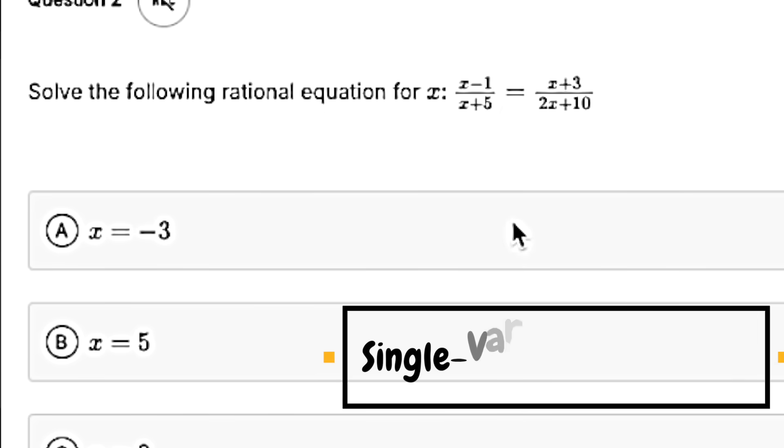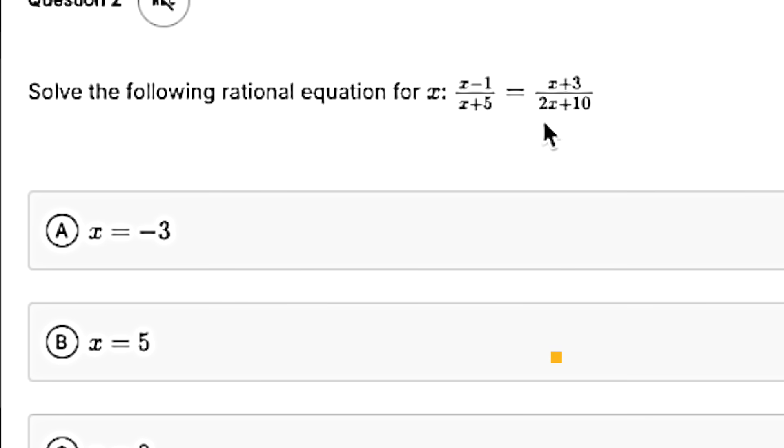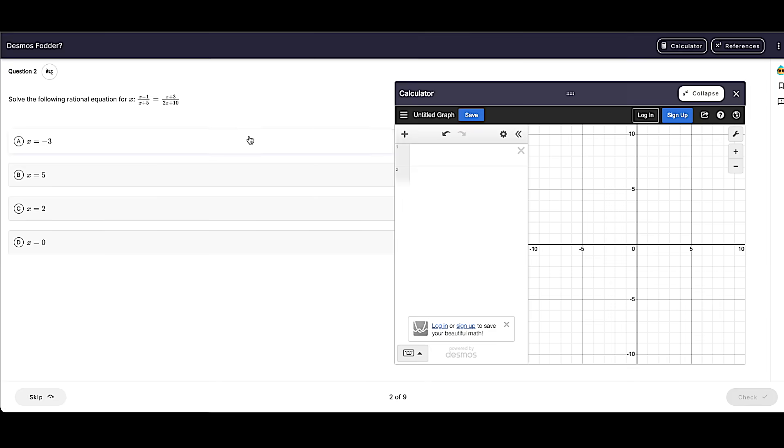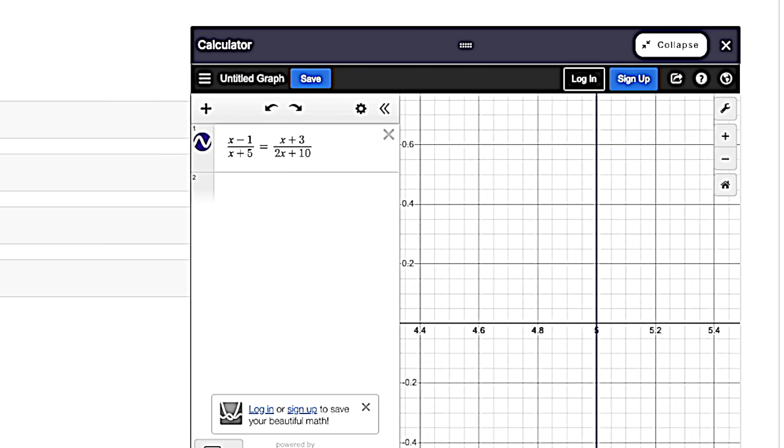You can also use Desmos for single variable equations. That would be when you only have one variable, usually x. And while you could plug this in exactly as is, you're going to end up with vertical lines. You actually have to zoom in to see what's going on. So this would be five.